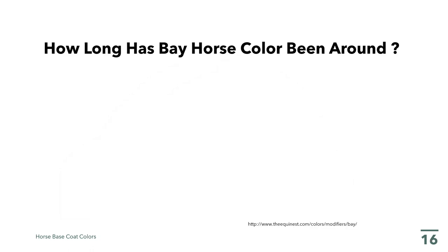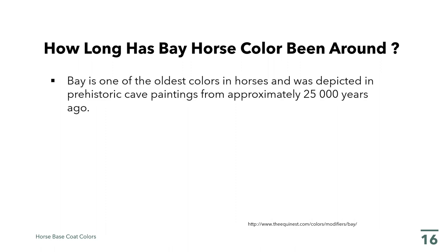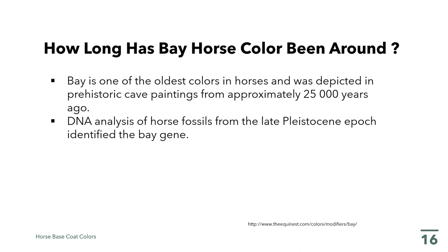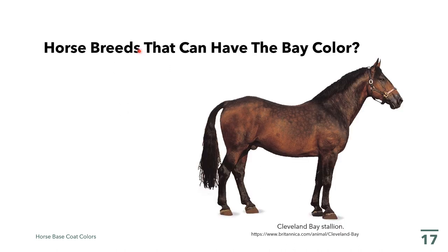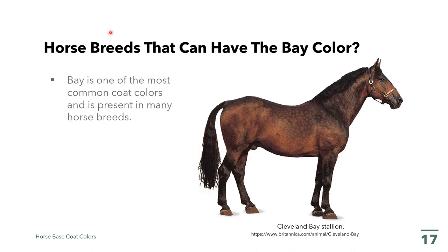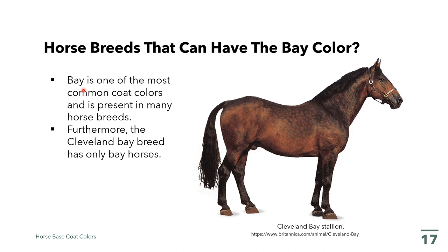Bay is one of the oldest colors in horses and was depicted in prehistoric cave paintings from approximately 25,000 years ago. DNA analysis of horse fossils from the late Pleistocene epoch identified the bay gene. Bay is one of the most common coat colors and is present in many horse breeds. Furthermore, the Cleveland Bay breed has only bay horses — here is a Cleveland Bay stallion exhibiting the bay color.